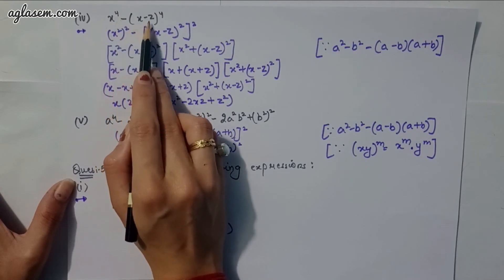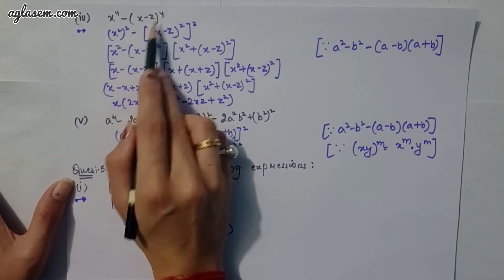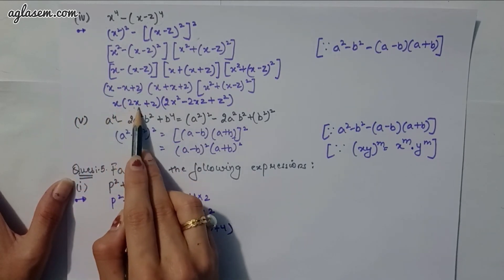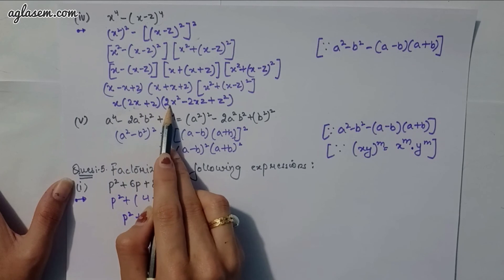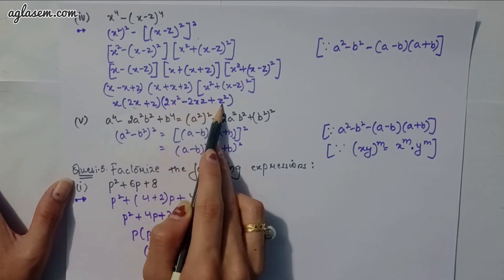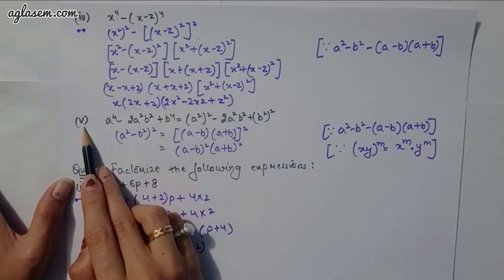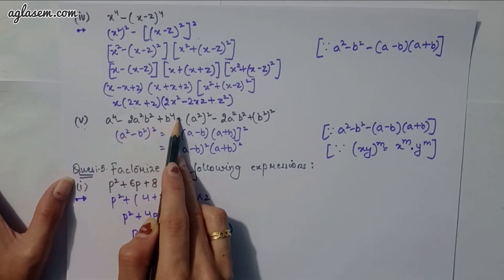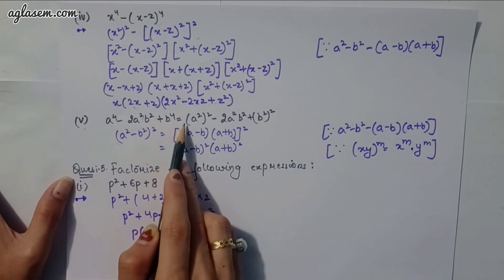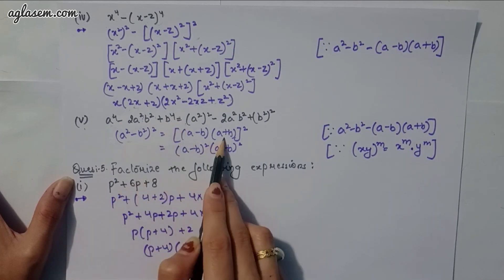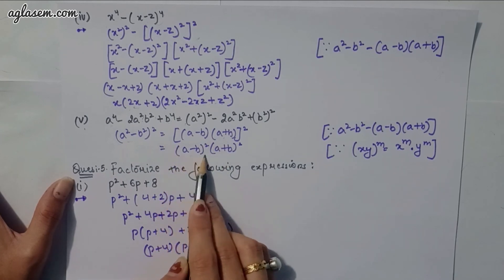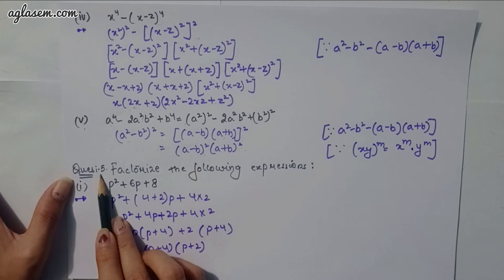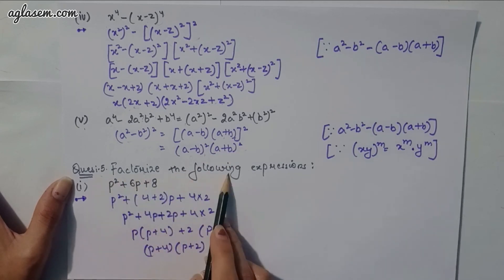Fourth part: x⁴ − (x − z)⁴. Solved similarly to give x(2x − z) · (2x² − 2xz + z²). Fifth part: a⁴ − 2a²b² + b⁴ = (a² − b²)² = (a − b)²(a + b)².